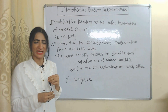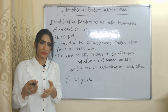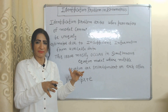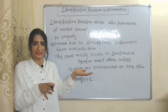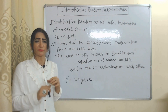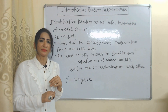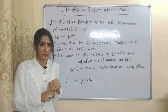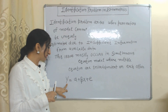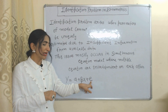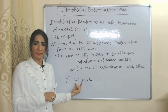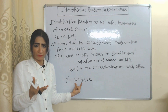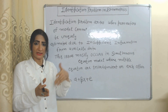Hello everyone, my name is Minis ATI. I hope you all are staying healthy. Today we are going to talk about the identification problem in econometrics. The identification problem arises when parameters of a model cannot be uniquely estimated due to insufficient information from available data. In a model, this is the dependent variable, this is the independent variable, and the error term; alpha and beta are our parameters. In order to uniquely estimate the value of these parameters, we need sufficient information.